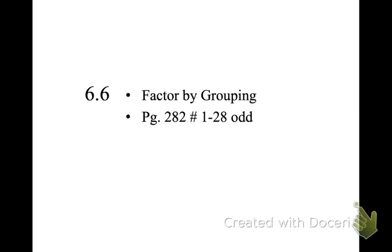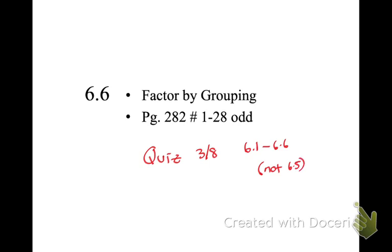I'm going out of order because 6-5 is a little bit more difficult. We will have a quiz on Monday — I believe it's 3-8 on 6.1 through 6.6, not including 6.5. 6.6 is a little bit easier than 6-5, so I just wanted a little bit more time with 6-5. We are doing this out of order, and then we'll be back to 6-5 on Tuesday.